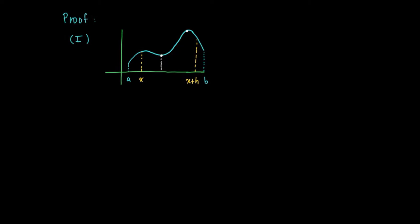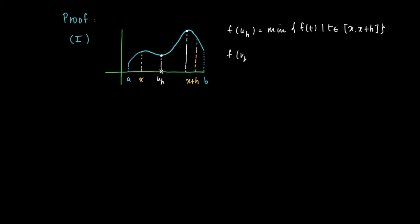We consider the function on the interval from x to x plus h. This function attains a minimum and a maximum since f is continuous on the closed interval [x, x+h]. So we may find a u(h) which is the point where f attains its minimum on [x, x+h], and similarly a v(h) where f attains its maximum on [x, x+h].